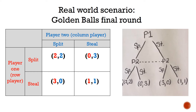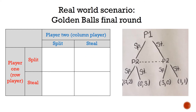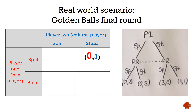Just looking at the payoff matrix, we'd assume split-split would be chosen. However, players make their choices simultaneously, so they do not know the choice of the other player when making their decision. In these circumstances, player 1 will choose steal. This is because if player 2 picked split, steal has higher utility as 3 is greater than 2, and if player 2 picked steal, then again for player 1, steal's utility is higher as 1 is greater than 0.